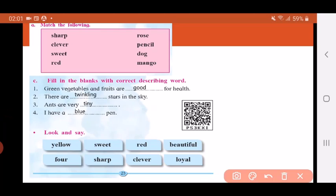In C, fill in the blanks with correct describing word. First one: Green vegetables and fruits are dash for health. Green vegetables and fruits are good or bad for health children? Good for health. So my describing word will be good.